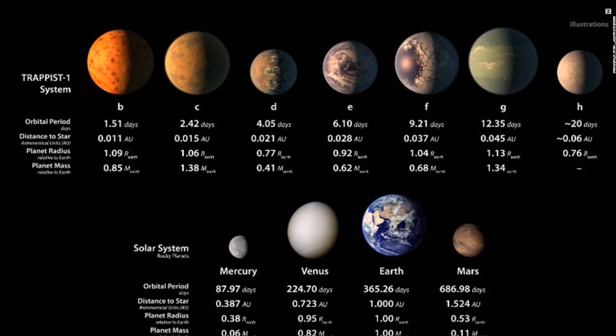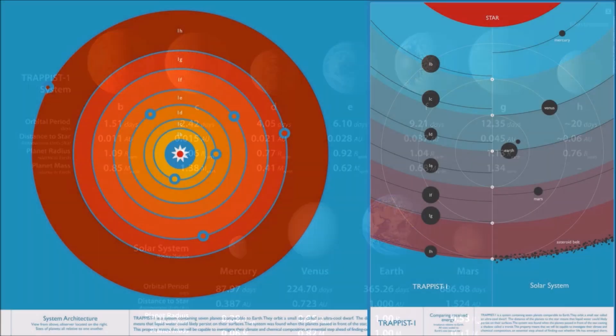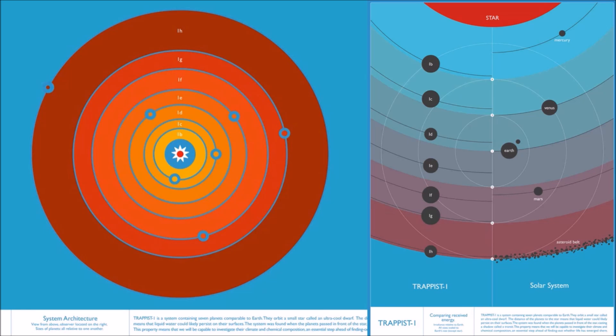Seven Earth-like planets orbiting one red star 39 light years away. Seven rocky planets, possibly with water like the Earth. Although the farthest one, TRAPPIST-1H, may be too cold to have liquid water. The closest three may be too hot, but numbers E, F, and G seem to be perfect to harbor life.